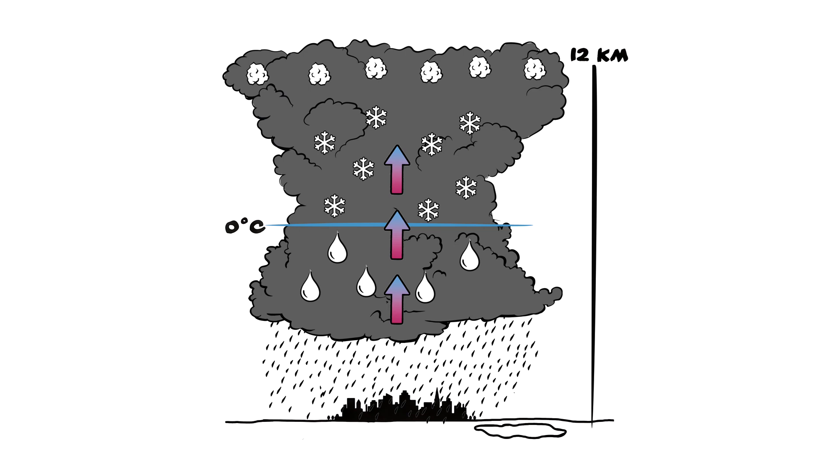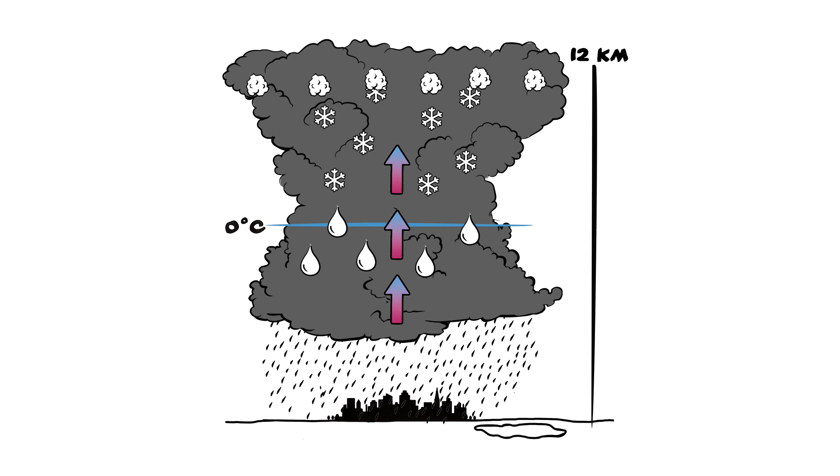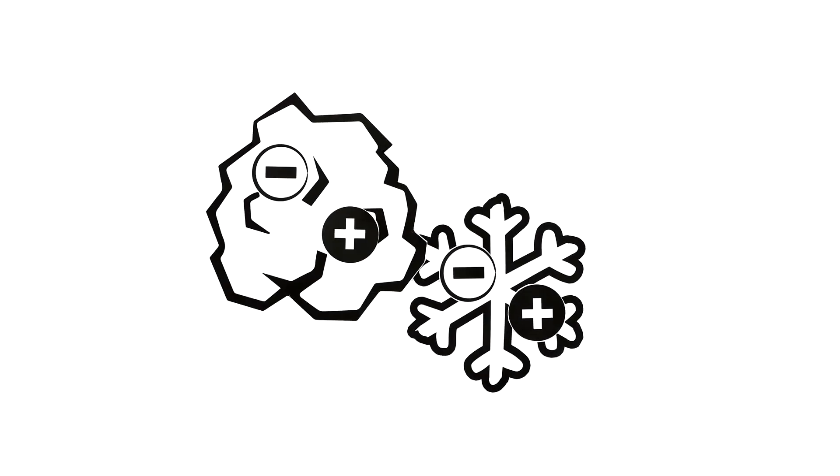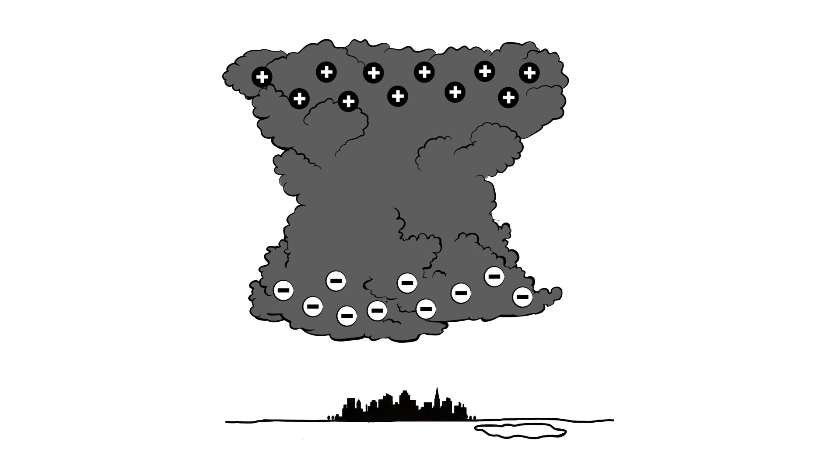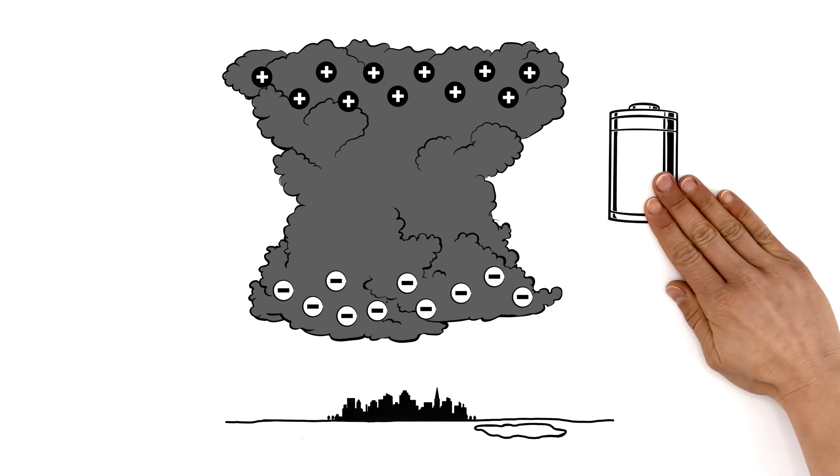In a thunderstorm light air particles are constantly carried upward by updrafts while heavier ones fall down. They then bump into each other and exchange their electrical charge. More positive particles collect high up in the cloud and at the bottom mostly negative ones. Voltage builds like in a huge battery.